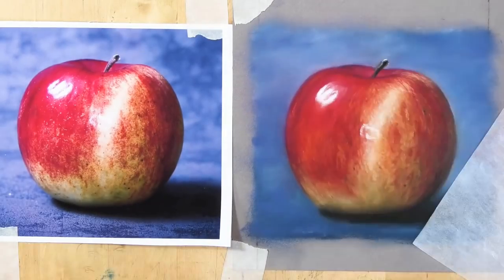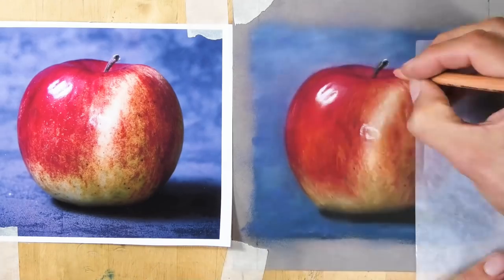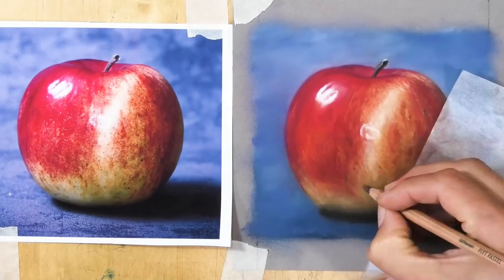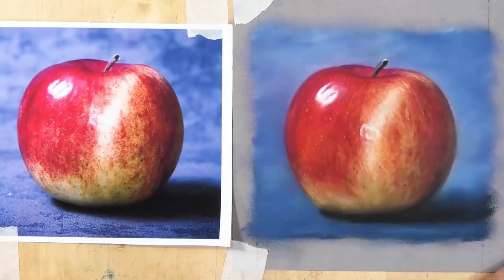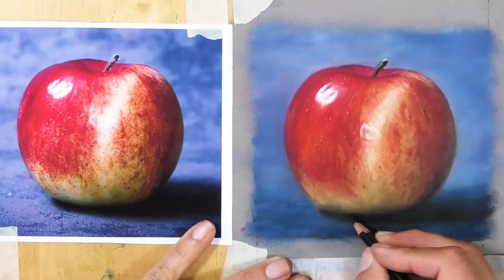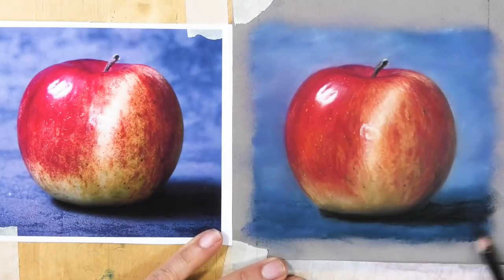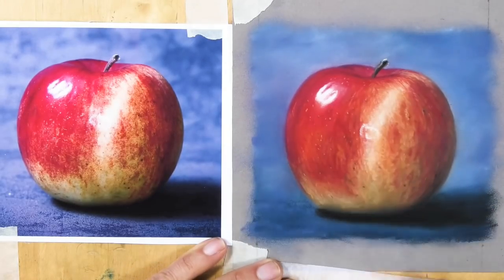Coming in now with the really bright highlight—that's going to start to make the apple look reflective and glossy. Then a couple of those little fine dots on the surface as well, and then it's a case of smaller and smaller bits of refinement.